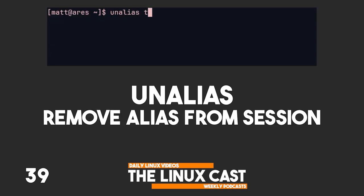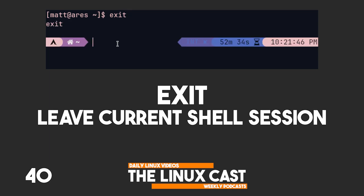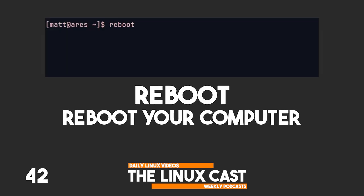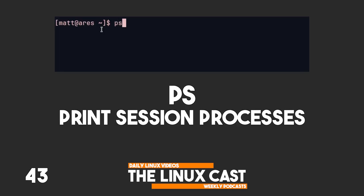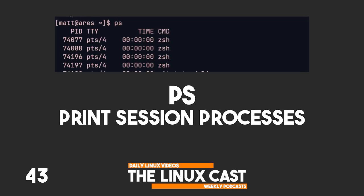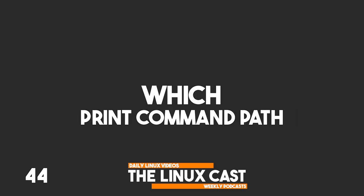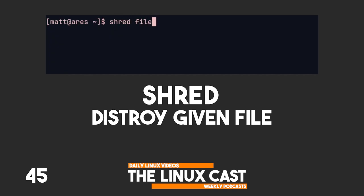unalias removes an alias from the current shell session. exit exits the current shell environment. shutdown shuts down the computer in one minute. reboot reboots the system. ps prints the processes of the current shell session. which prints the full path of a given shell command or program. shred destroys a file by overwriting it with useless data.